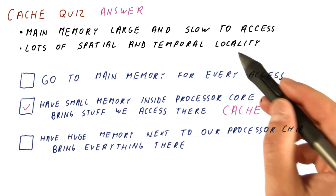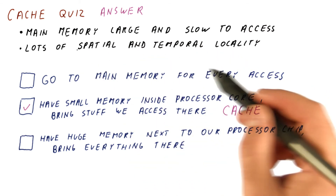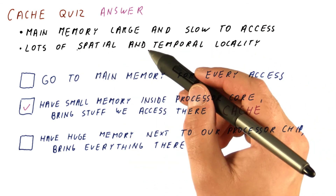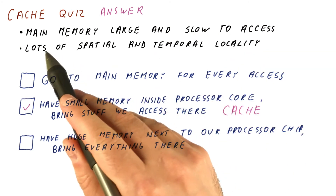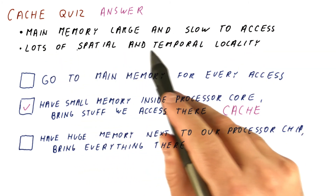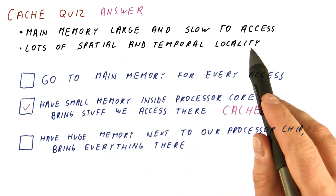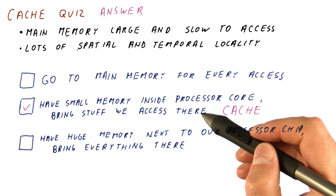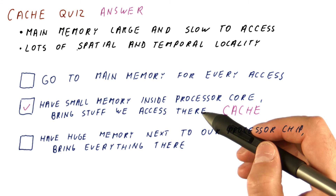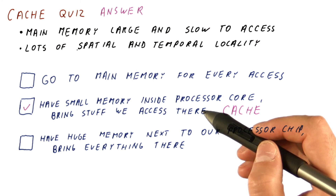So caches are exploiting spatial and temporal locality and overcoming the problem of having a slow and large main memory, just like borrowing books from the library is exploiting spatial and temporal locality and overcoming the problem of accessing a huge library slowly.